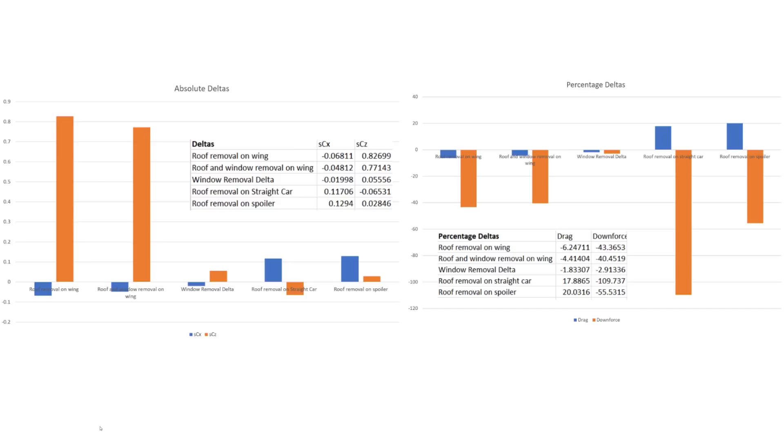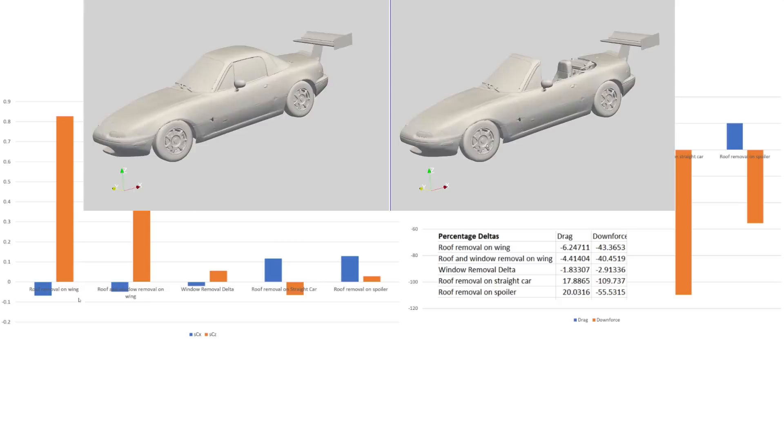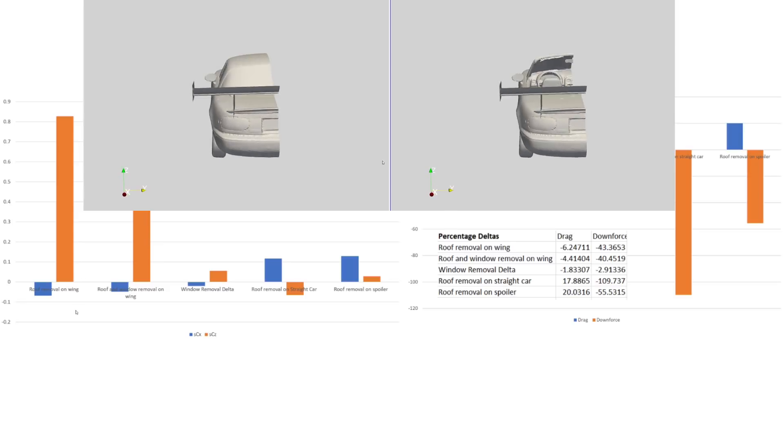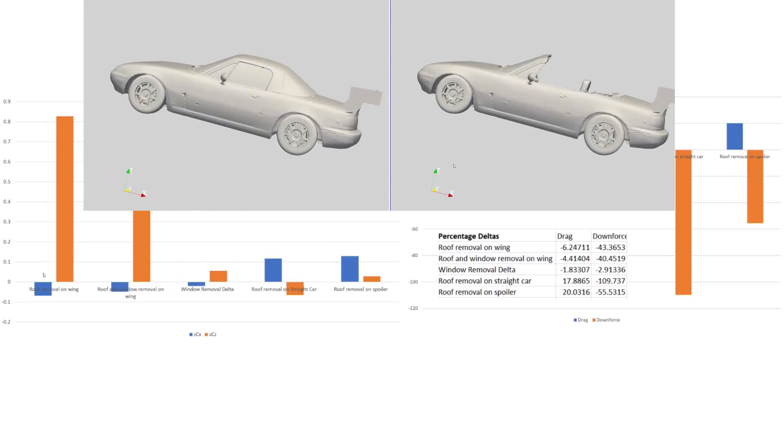Okay, so let's start off with some numbers analysis of the various runs we've done. So on the left hand side, we've got our absolute deltas, so how much the downforce and drag have changed in terms of their absolute SCX and SCZ, their coefficients. And then on the other side, we have our percentage deltas, which is how much our drag and downforce have changed in terms of percentage values.